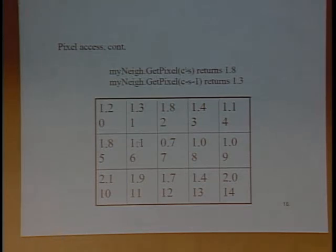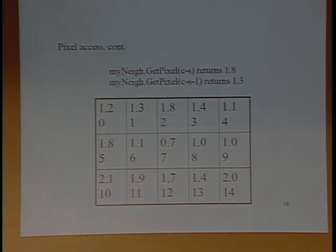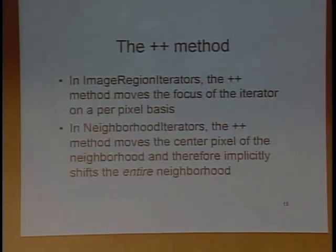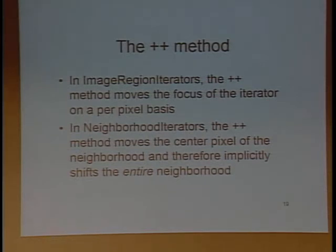Similarly, if you subtract C by the stride in Y, it will give you the position of the pixel one pixel away in the negative Y direction - that's the pixel at position 2. And C minus 1 minus stride gives you the upper-left pixel relative to the center pixel. For the increment operation: in image region iterator the increment method moves the pointer to the next pixel, while in neighborhood iterator it moves the center pixel, and therefore the entire neighborhood will shift.